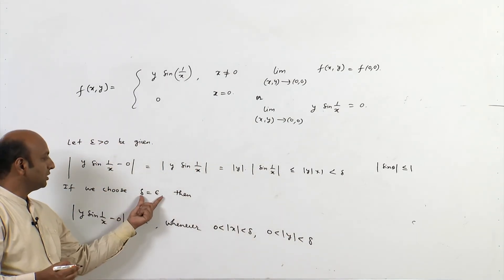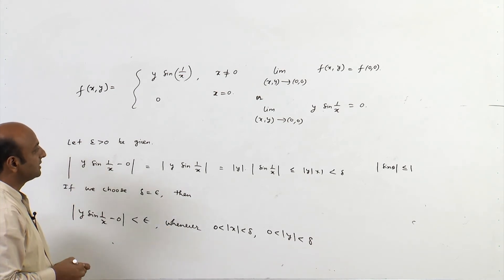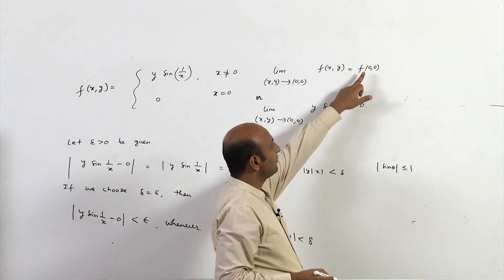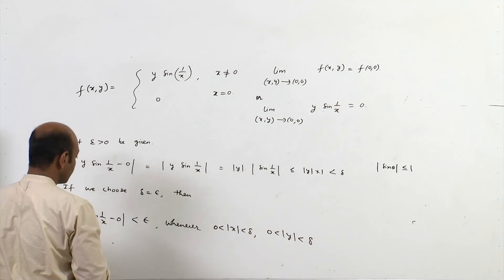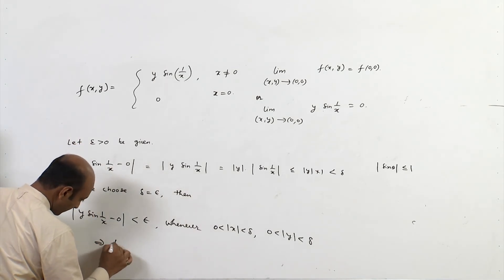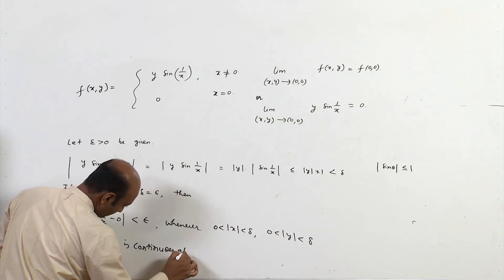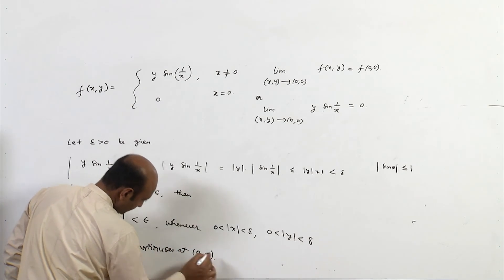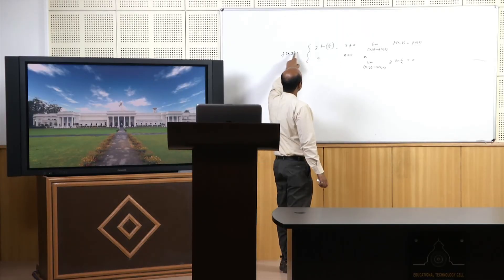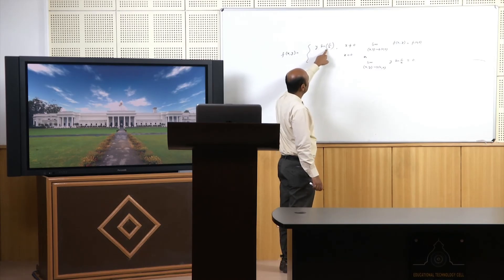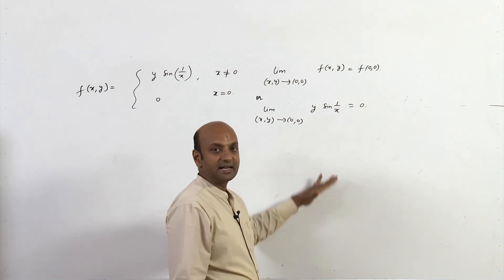We have shown the existence of such δ for which the inequality holds. Hence the limit exists and equals 0, which is the value of the function at (0,0). This implies f is continuous at (0,0). So the function y·sin(1/x) is continuous at the origin, as shown by the epsilon-delta definition.